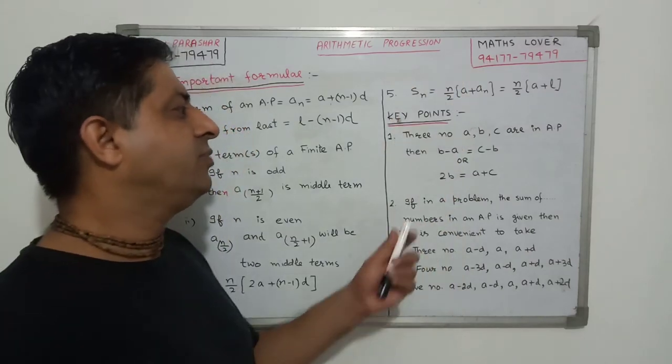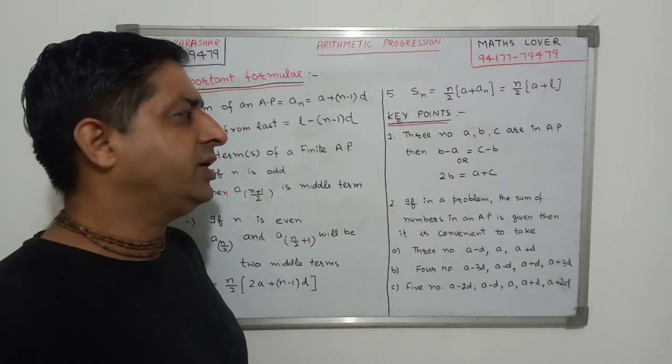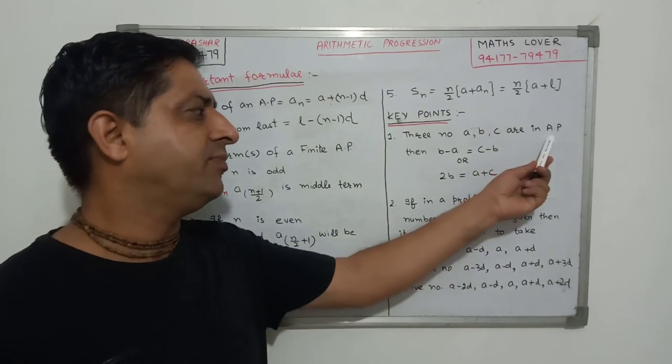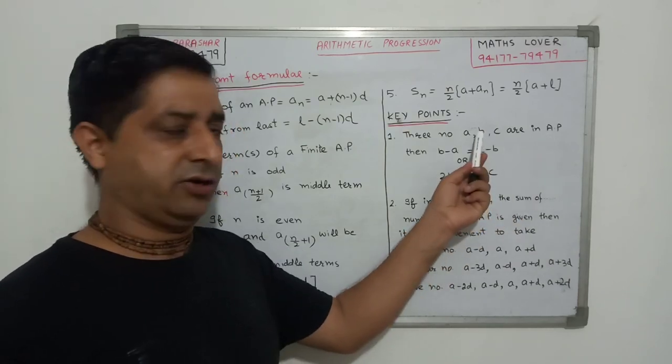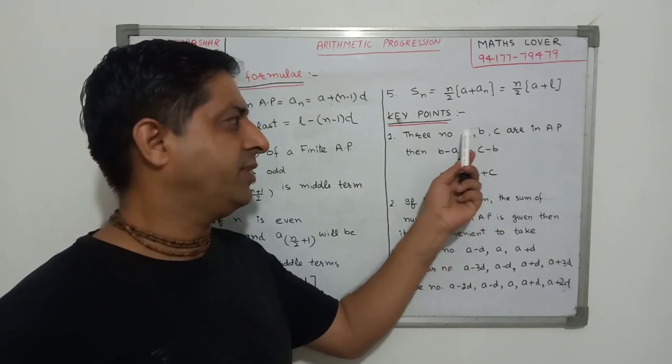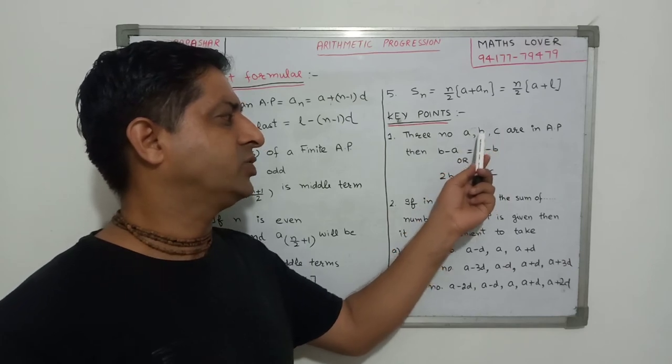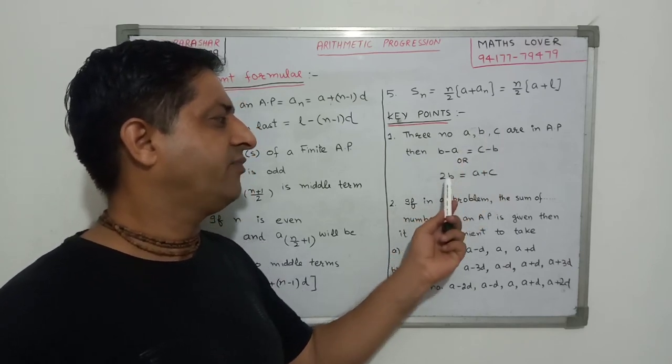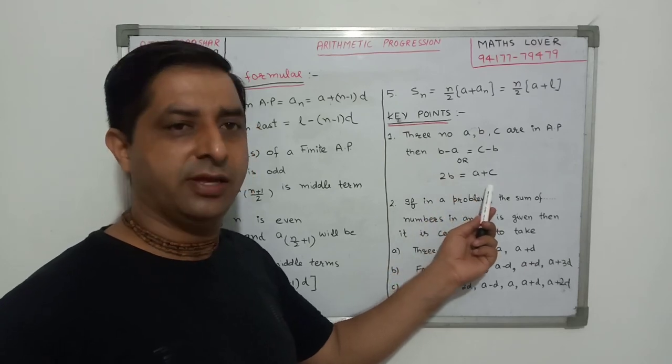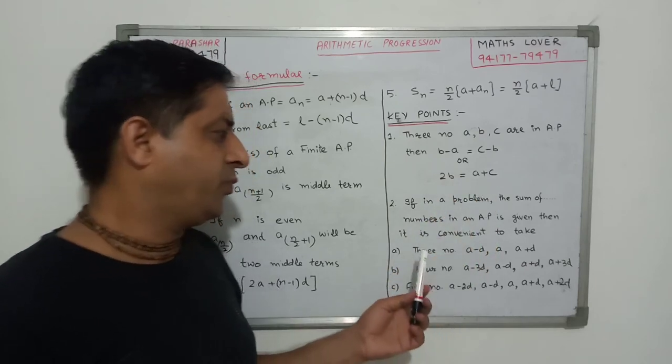Now some important key points. If the three numbers A, B, C are in AP, if three numbers are in AP, then their common difference remain same. Then B minus A must be equals to C minus B. Or we can say that when we shift B to this side we get 2B is equals to A plus C. Very, very much important point.